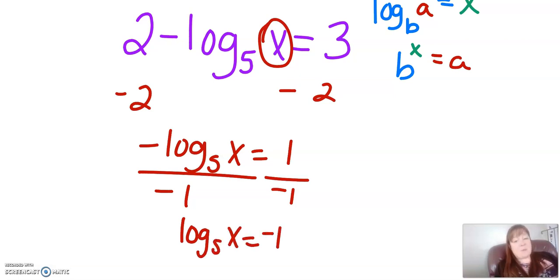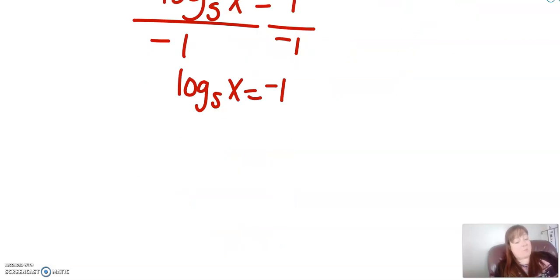Okay, now I'm into this basic form, where I have a base and an argument and an exponent. So I can switch this around. So I can say 5, the base, to the exponent equals the argument, and so now I have x equals 5 to the negative 1.